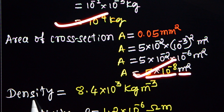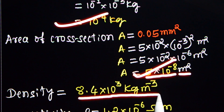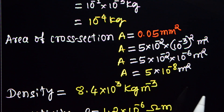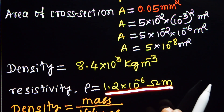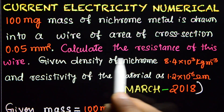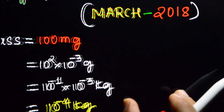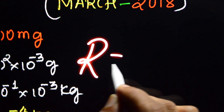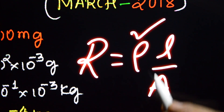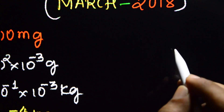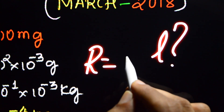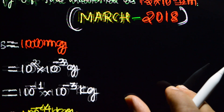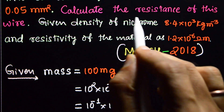The density of the material is 8.4 × 10³ kg per meter cube, and the resistivity of nichrome is 1.2 × 10⁻⁶ ohm meter. To calculate resistance, we use the formula R = ρL/A. Rho is given, area is also given, and we need to find the length of the wire. If we can calculate the length of the wire, we will arrive at the resistance.